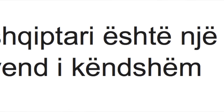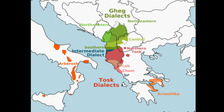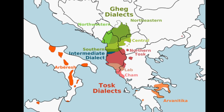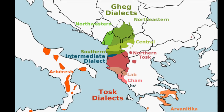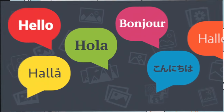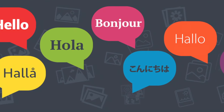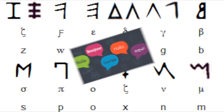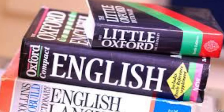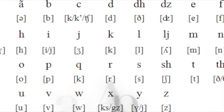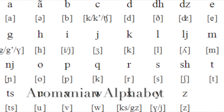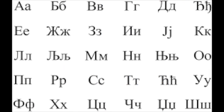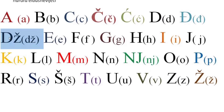The official language in Albania is Albanian. Albanian can be split into two dialects: Tosk, which is spoken in the south, and Gheg, which is spoken in the north. Albanians tend to be multilingual. In addition to Albanian, many Albanians also speak Greek, English, and Italian. The minority languages include Aromanian, Serbian, Macedonian, Bosnian, Bulgarian, Gorani, and Roma.